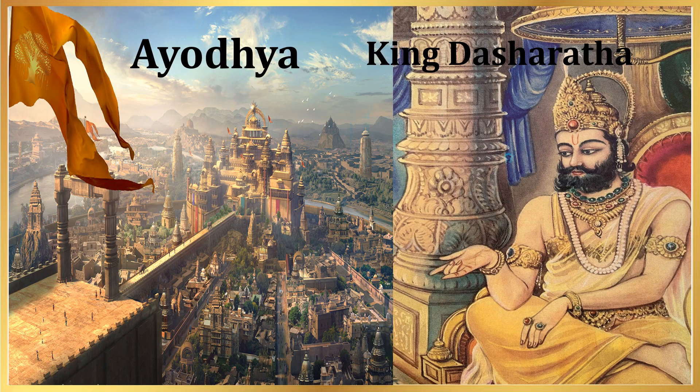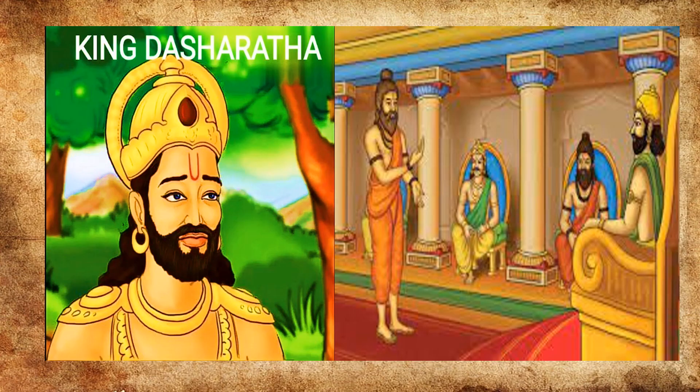Long, long ago there lived a king named Dasharada. He was the king of Ayodhya who belonged to the Ikshvaku dynasty. He ruled his kingdom with great compassion, a sense of justice, and courage. King Dasharada did not have any sons, so his guru sage Vasistha advised him to perform the Putra Kamishti Yagna. Being a very difficult Yagna, sage Rishri Sringa was invited to perform it due to his power of purity.